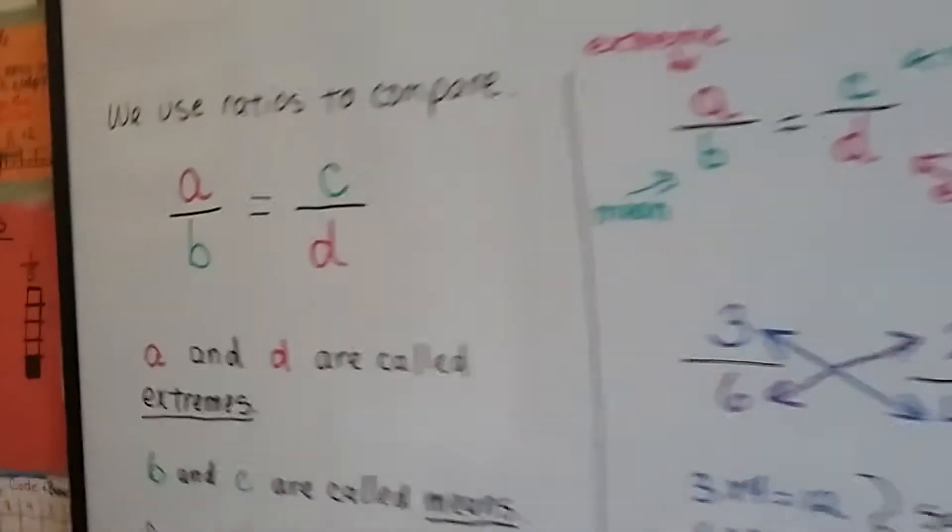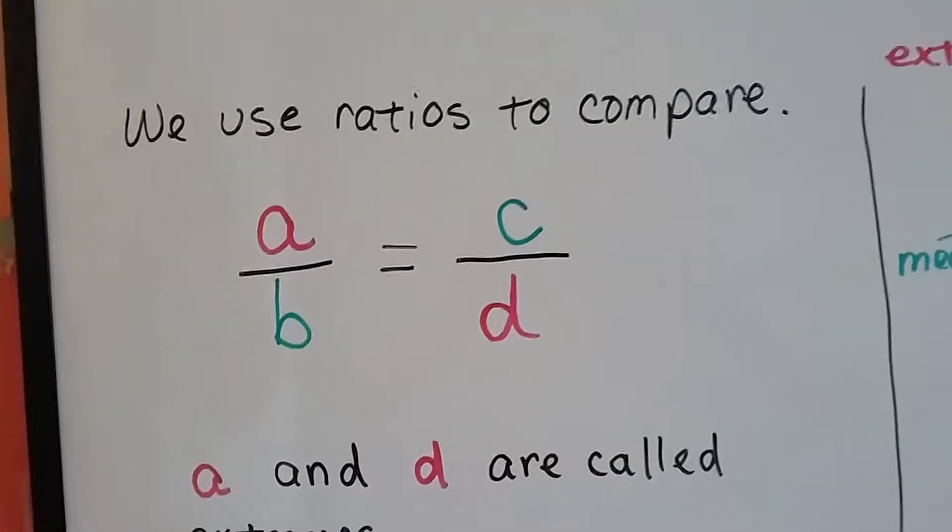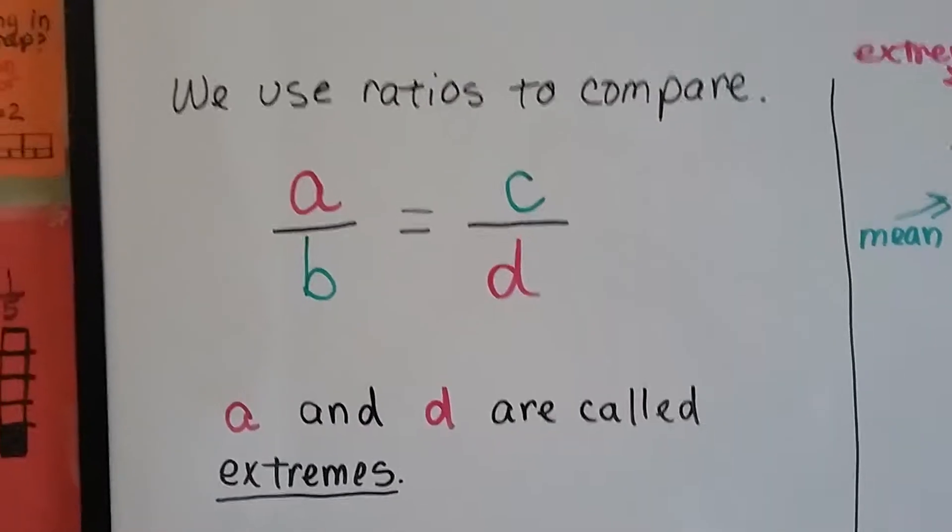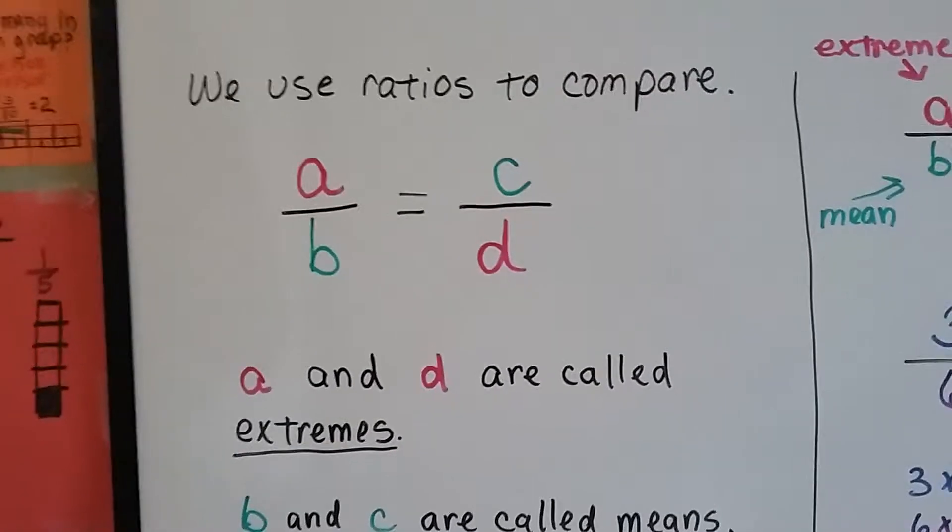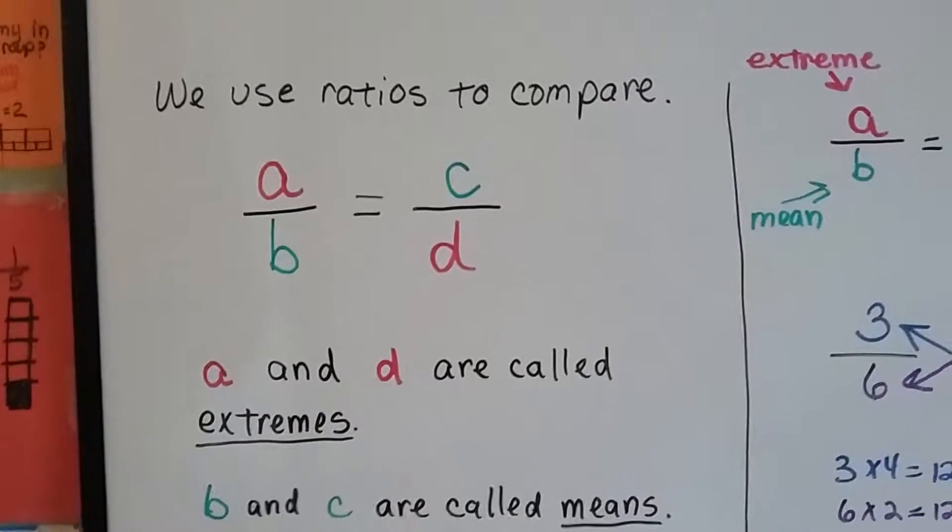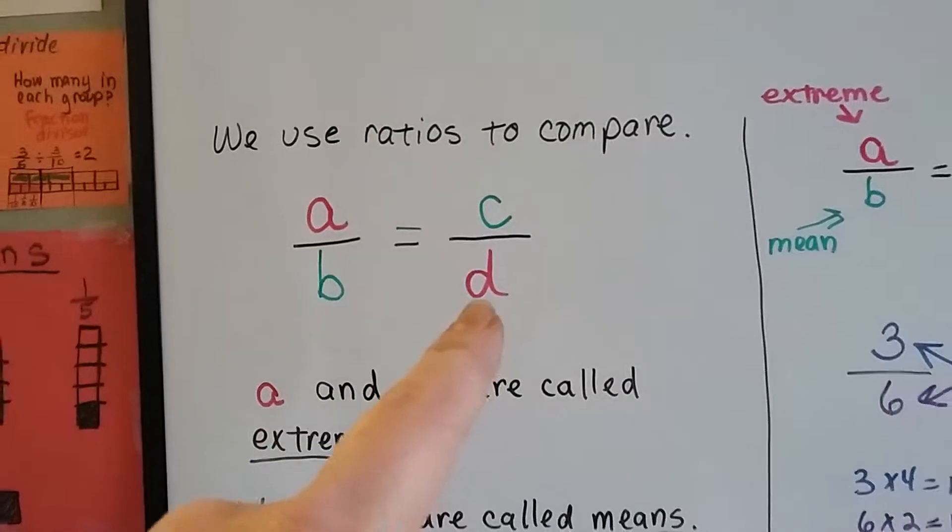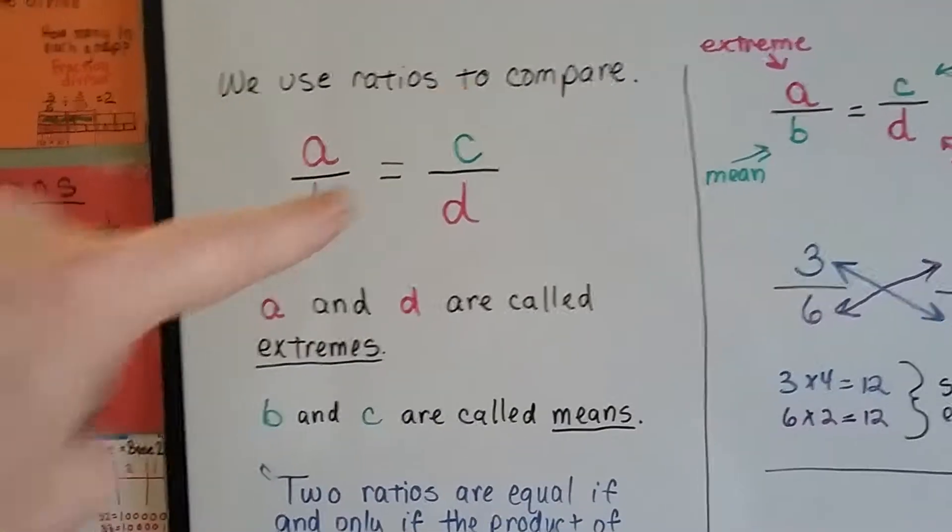We use ratios to compare. a/b equals c/d. a and d are called the extremes. The pink ones are called the extremes. See how they cross? b and c are called the means.